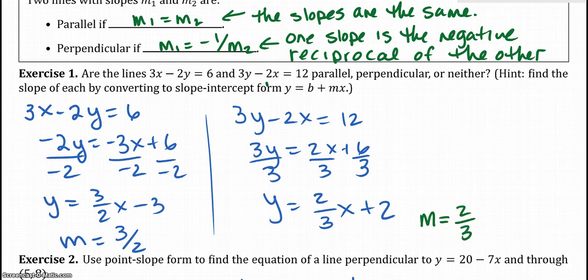So you think, oh, well, they're not the same, so they're not parallel. But they're not, one is not the negative reciprocal. We're missing the negative word, right? We have the reciprocal. They are flipped, but it doesn't have the negative. So it's actually neither. The answer is neither.